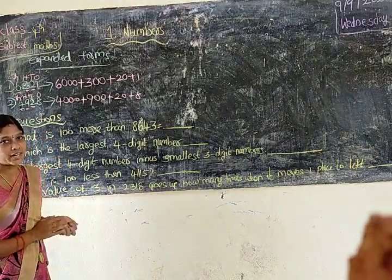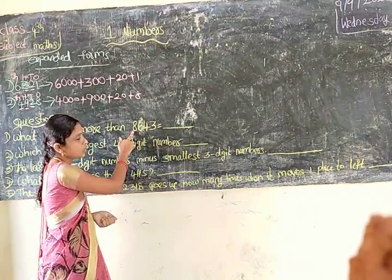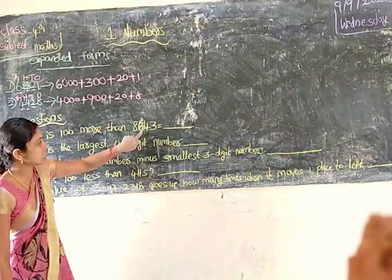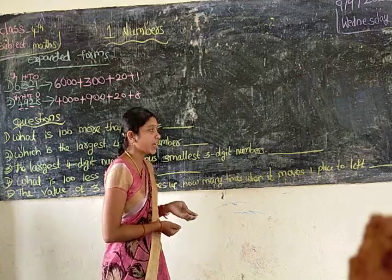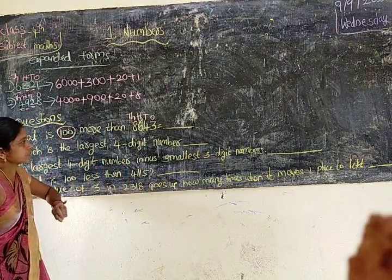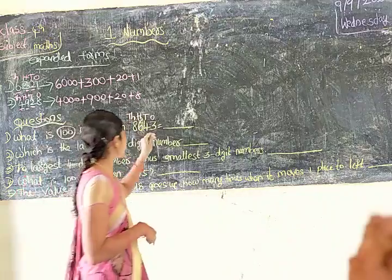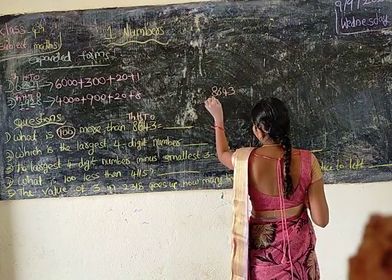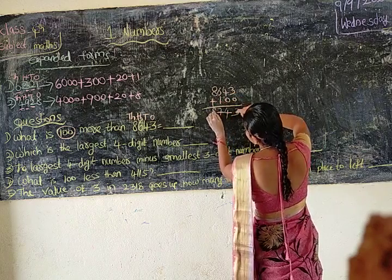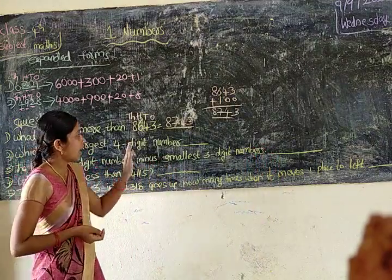Next two questions. First: what is a hundred more than eight thousand, six hundred and forty-three? We take place values — ones, tens, hundreds, and thousands. In the hundreds place we have six. Adding one hundred: six plus one is seven. So the answer is eight thousand, seven hundred and forty-three. More than means we add.